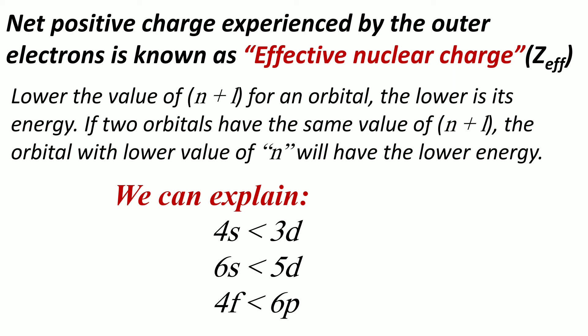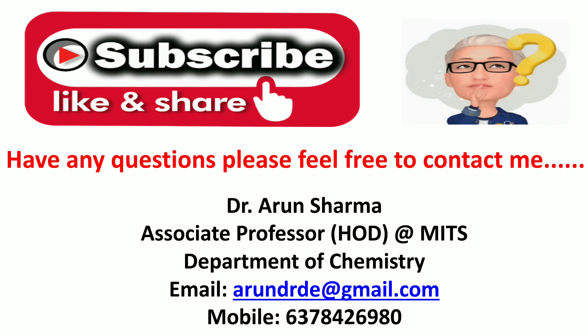For 4f and 6p orbitals, the n plus l value for 6p is 6 plus 1 equals 7, and for 4f it is also 7, since the azimuthal quantum number for f orbitals is 3, giving 4 plus 3 equals 7. The values are the same, but the 6p orbital has higher energy than 4f because the principal quantum number n for 6p is 6, which is greater than 4 for the 4f orbital. Therefore, 4f has lower energy than 6p. Please subscribe to this channel for more videos. Thank you.